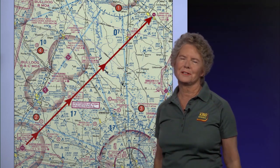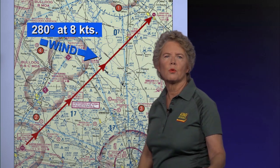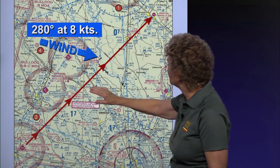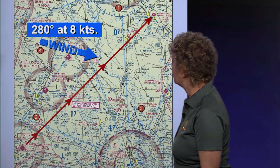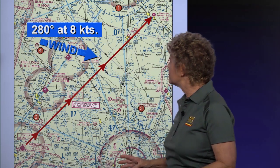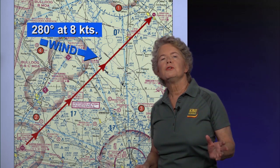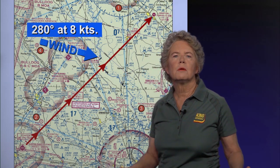Estimating direction lets you apply a test of reasonableness to the compass heading you come up with. If it's way off of northeast, you know you've probably got a mistake somewhere. You also want to estimate the wind effect. You're flying northeast bound with a wind from the west at 280 degrees and 8 knots, so you'll have a slight tailwind and a wind from the left side, meaning you'll need to crab a little to the left — carrying a left wind correction angle.